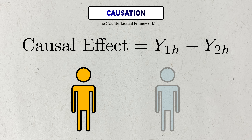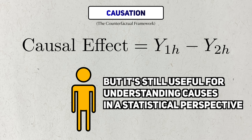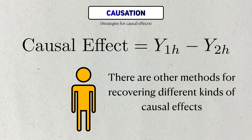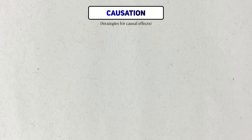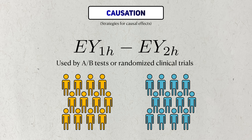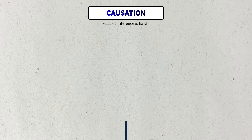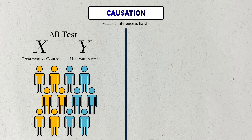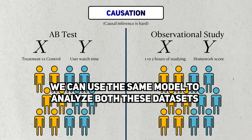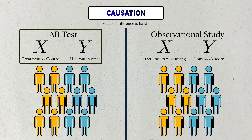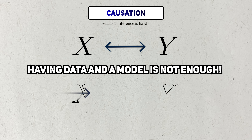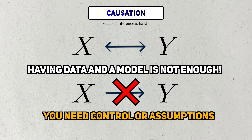In reality, we never see the counterfactual scores, but these ideas help set up how statisticians in causal inference think about causes. With this impossible-to-observe causal effect in mind, there are other strategies to still estimate causal effects — one strategy is to calculate an average causal effect rather than an individual one. This is what AB tests and randomized clinical trials do. But here's the catch: the data from an AB test doesn't look much different from my homework experiment data, and both can be analyzed with the same statistical model like a linear regression. But one gives us causal evidence, and the other only tells us about associations. Just having data and a statistical model won't let you estimate causal effects — you need control, or you need assumptions.